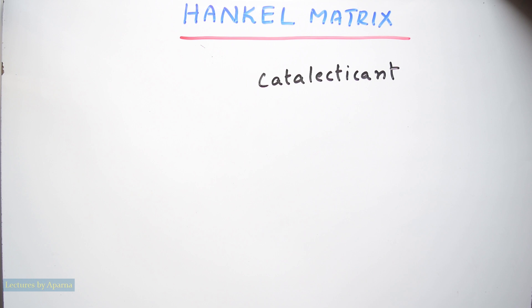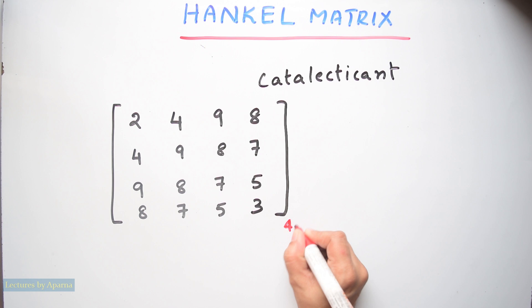This is a Hankel matrix. It is a square matrix. In this example, it is a 4 by 4 square matrix.